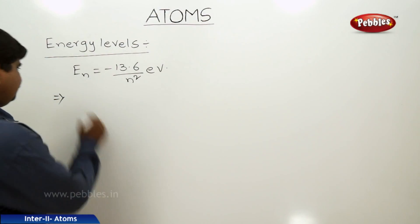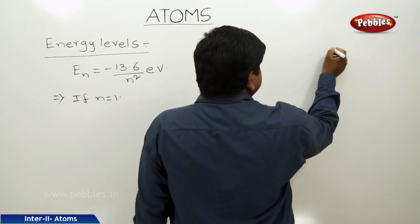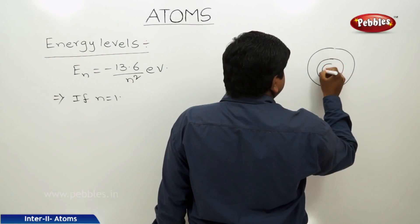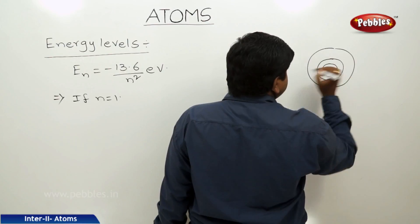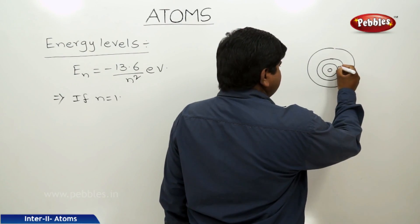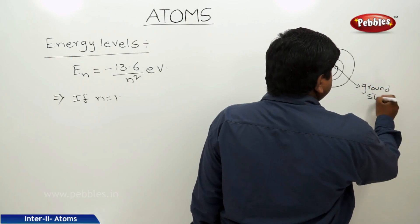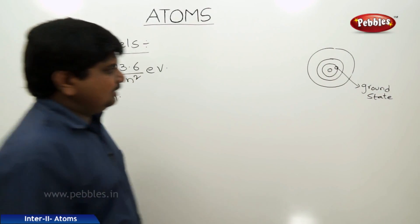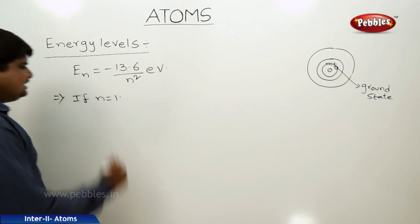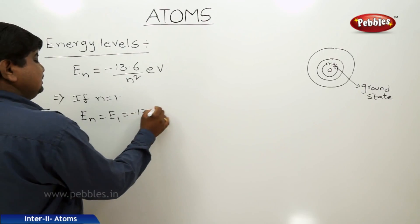If n is equal to 1, that means this is an atomic structure — the smallest part is the nucleus. The orbit which is very close to the nucleus, the first one, is said to be the ground state. Its number is n equal to 1. Substituting n equal to 1, we get E1 equal to minus 13.6 eV.